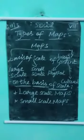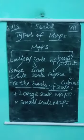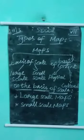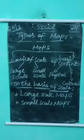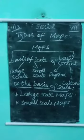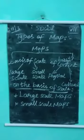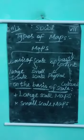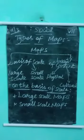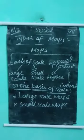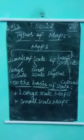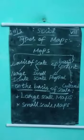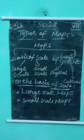On the basis of scale, maps are divided into two types: large-scale maps and small-scale maps. Large-scale maps show a smaller area in greater detail, because they are drawn on a relatively large scale. Small details of an area are shown clearly in large-scale maps.